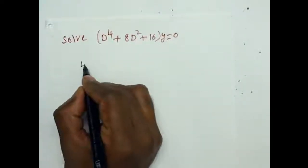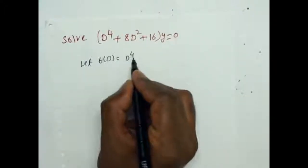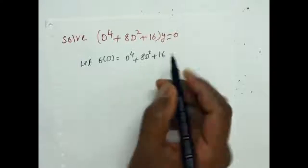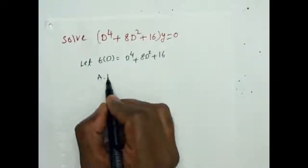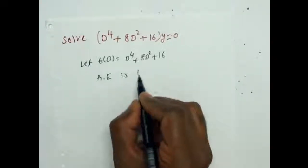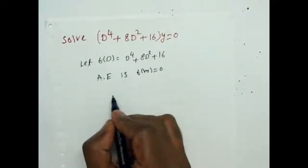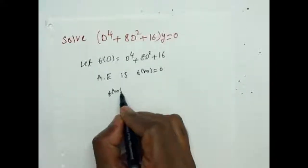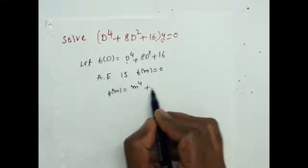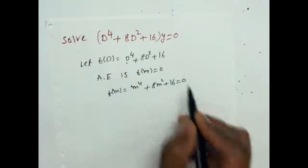Let f(D) = D⁴ + 8D² + 16. Then the auxiliary equation — AE means auxiliary equation — is f(m) = 0. f(m) means in place of D you write m, that is m⁴ + 8m² + 16 = 0.